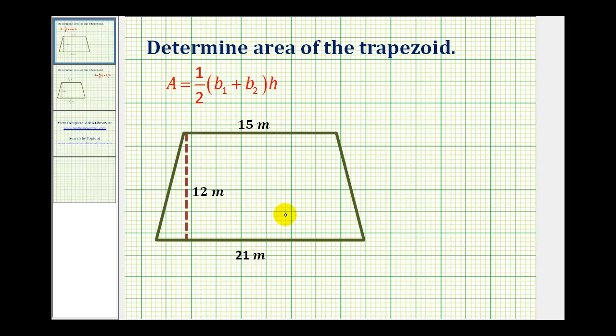Looking at our trapezoid, let's call this side here b₁ and this side here b₂. So for our formula, b₁ is equal to 15 meters and b₂ is equal to 21 meters, and the height h is equal to 12 meters.